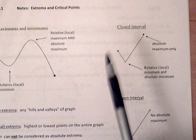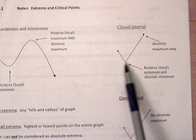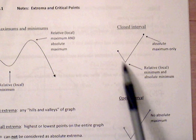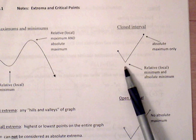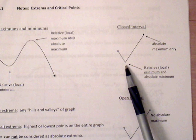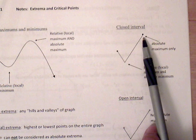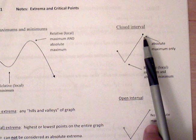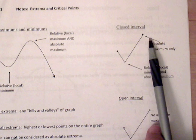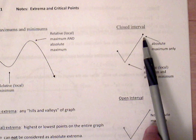On a closed interval, here we have a relative minimum and absolute minimum. It's a relative minimum because it's a valley of the graph, and an absolute minimum because it is the lowest point throughout this entire closed interval. This is an absolute maximum because it's the highest point on the graph, but we can't consider this a relative maximum because this point is not a hill — there's nothing to the right of it.